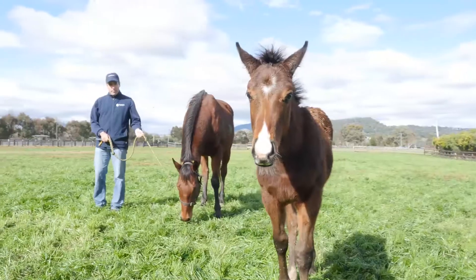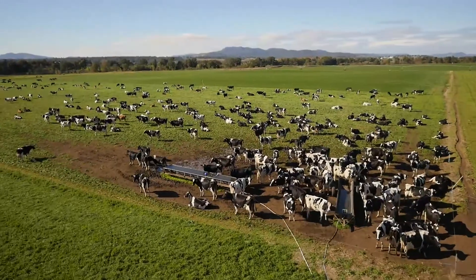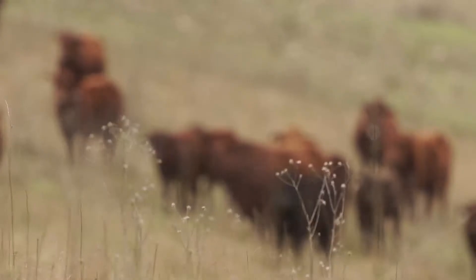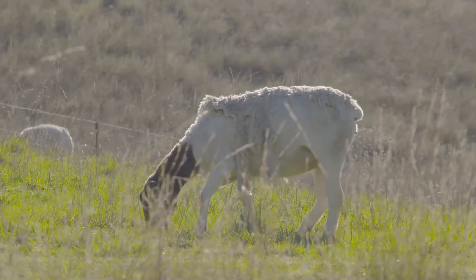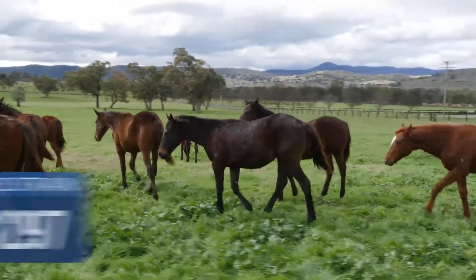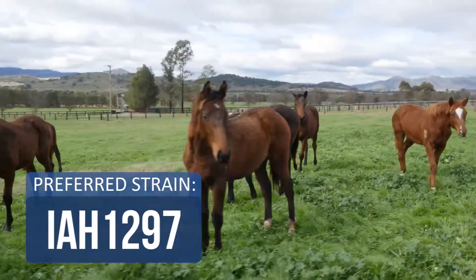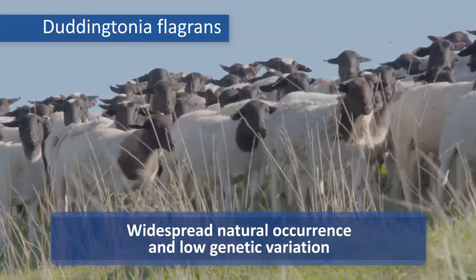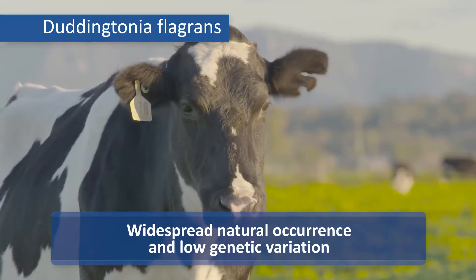The selected strain of Duddingtonia flagrans is a natural fungus isolated from pasture and was one of 25 strains found as part of a field survey of nematophagous fungi in Australia by the CSIRO in 1992-93. The preferred strain became IAH 1297. Globally, Duddingtonia flagrans has widespread natural occurrence and low genetic variation, meaning it is similar all around the world.